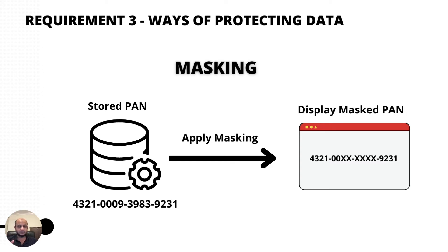If a person does not have a requirement to see the full PAN, you can mask it — replacing card digits with Xs. The maximum you can show is the first six and last four digits; everything else you mask out. This applies to computer screens and any situation where there is no business need to view the entire PAN. Some people, like call center agents, may have a need to see the full PAN — you need to document that.